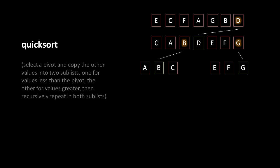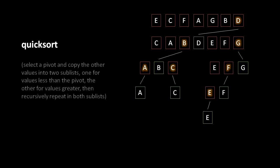We now recursively apply this same logic to the three sublists. A and C are the only elements in their lists, so they are selected as the pivot. In the list of E and F, F is the last value so we select that as pivot. A ends up with nothing to its left or right, the same for C, but F has a single element E to its left. Recursively applying this logic one last time, we use E as a pivot, but there are no other values so it has nothing to its left or right. We've recursively applied the process until every value has been used as a pivot.